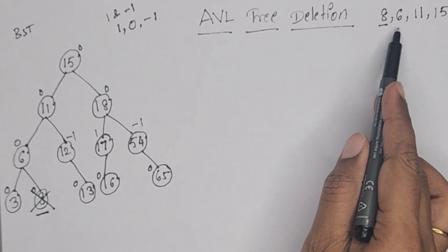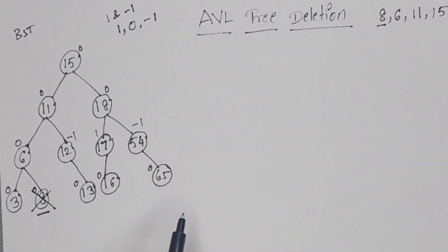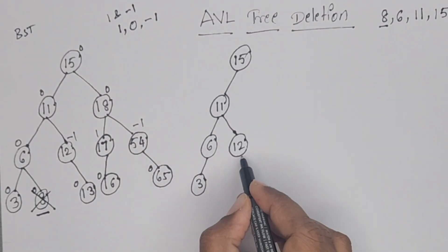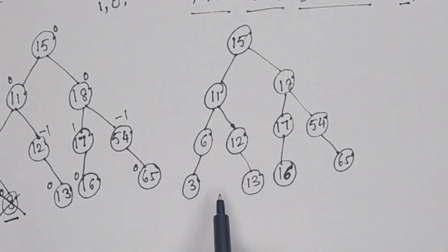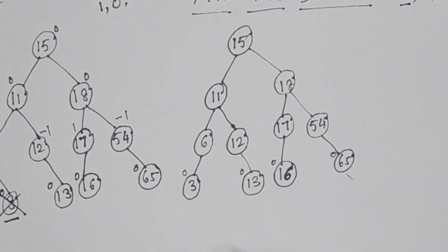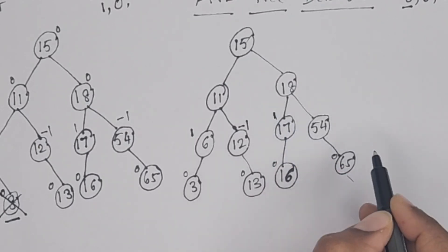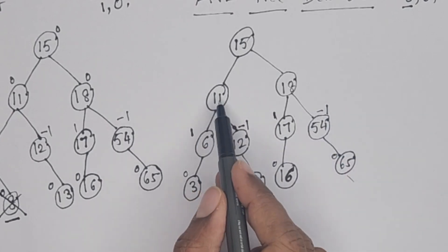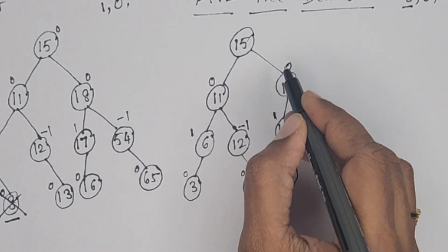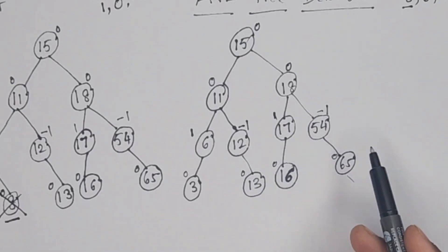After removing 8, before removing the next element, you have to write balance factors again. If it is balanced, then only you can remove another element — that is the key difference. After deleting 8, all leaf nodes have balance factor 0. For node 6: 1 minus 0 = 1. For node 2: 0 minus 1 = minus 1. For node 17: 1 minus 0 = 1. For node 54: 0 minus 1 = minus 1. For node 11: 2 minus 2 = 0. For node 18: 2 minus 2 = 0. For node 15: 3 minus 3 = 0. The tree is balanced — it is still an AVL tree.